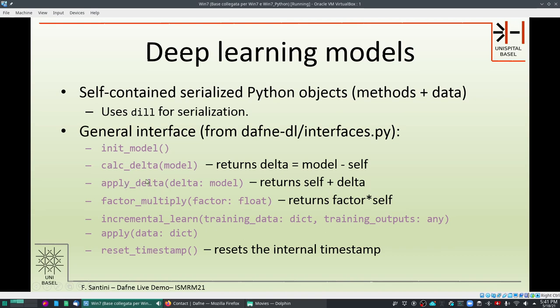This apply delta is also overloaded then to generate the plus operator and the calc delta is also overloaded as a minus operator. The factor multiply is also realized with a star operator so that the model itself can be treated as if it was a numerical object, and there is also the reset timestamp method that is used to reset the internal timestamp to keep chronological order of the models that we deploy.